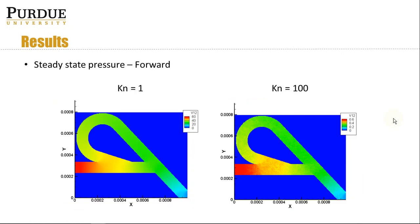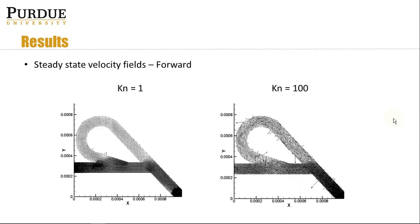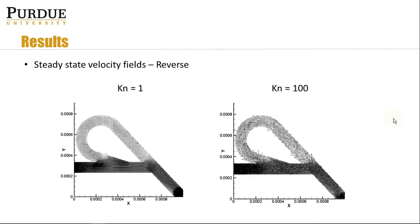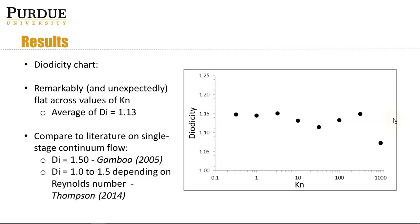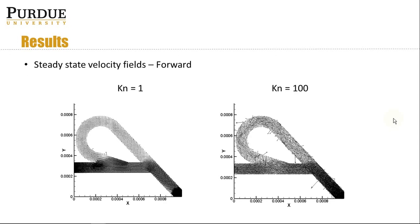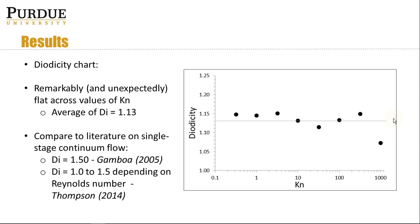This is the pressure field for the forward steady-state case. Forward steady-state results for two Knudsen numbers — you can see they match up pretty well. Here's the reverse case. Here's the velocity field in the forward direction and the velocity field in the reverse direction. One thing to note is that these don't change that much for the high Knudsen number, which is indicative that steady state has been reached, but also indicative that there's not too much circulation around the baffle.